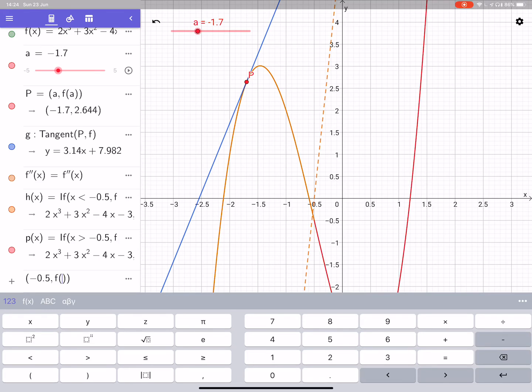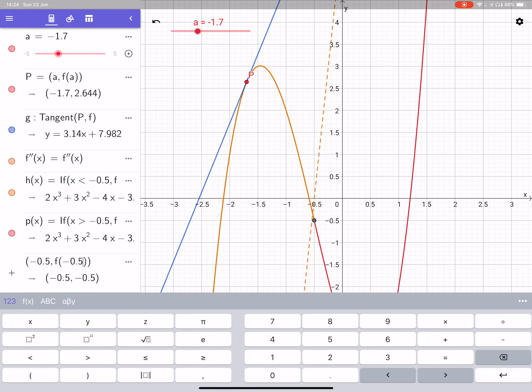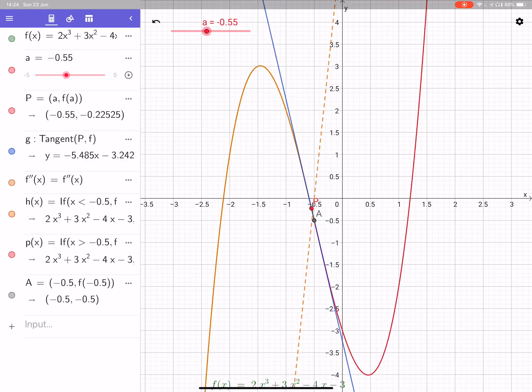And if we just plot the point f of minus 0.5, okay we'll see that point appear. Where the point a is, is the actual point of inflection. That's the point where the tangent crosses from one side to the other.